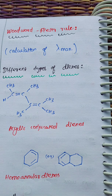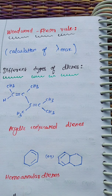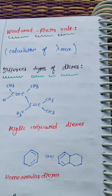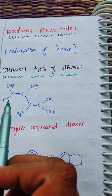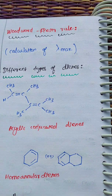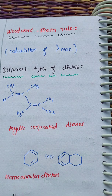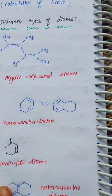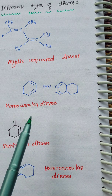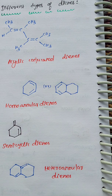You can also try to identify the different types of dienes. So, different types of dienes: first, Acyclic — it is a straight line, not a ring structure. This is called Acyclic Conjugated Dienes. Conjugated means alternating double bonds: double bond, single bond, double bond. This is the Acyclic Conjugated Diene system.